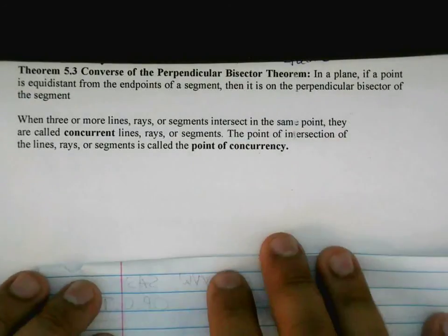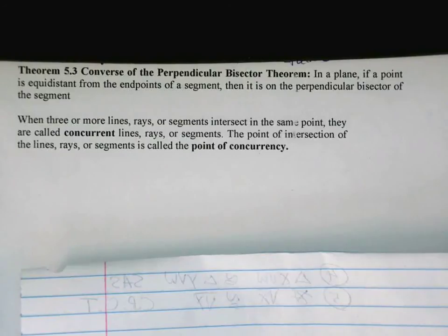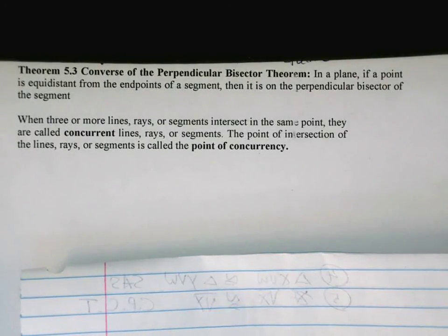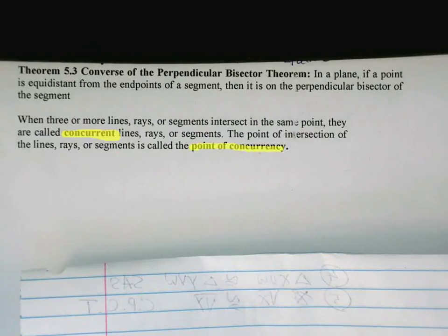This says that when three or more lines, rays, or segments intersect in the same point, they are called concurrent lines, rays, or segments. The point of intersection is called the point of concurrency. One of the key parts here is that it's got to have three.